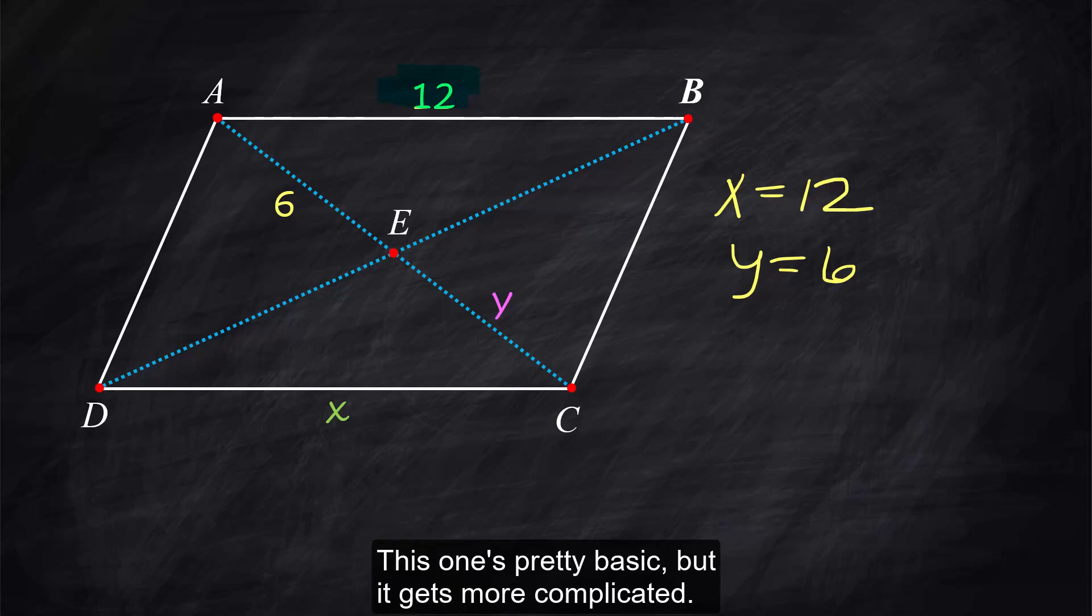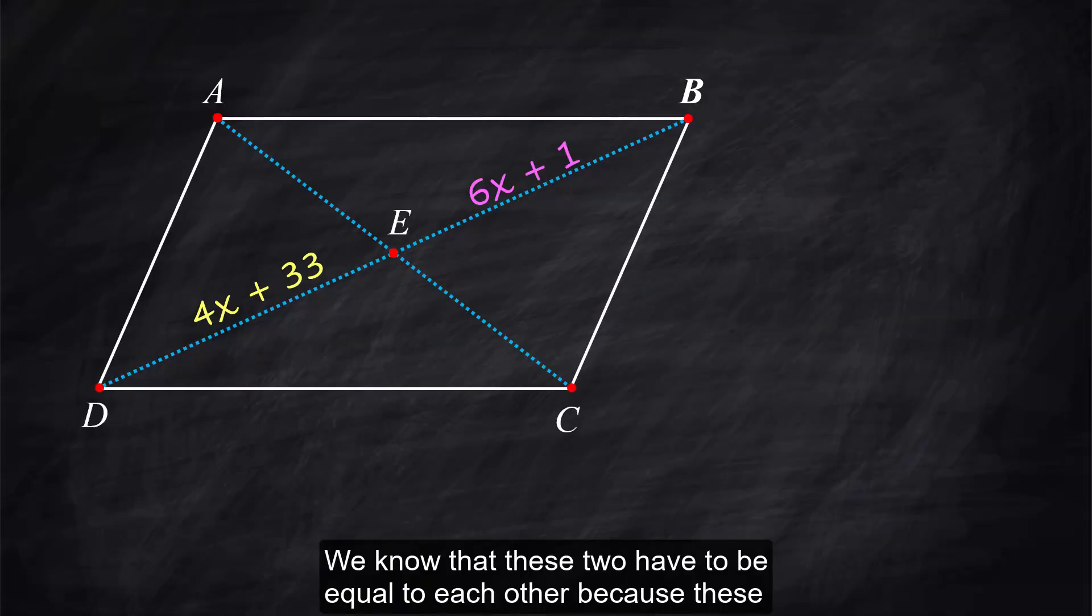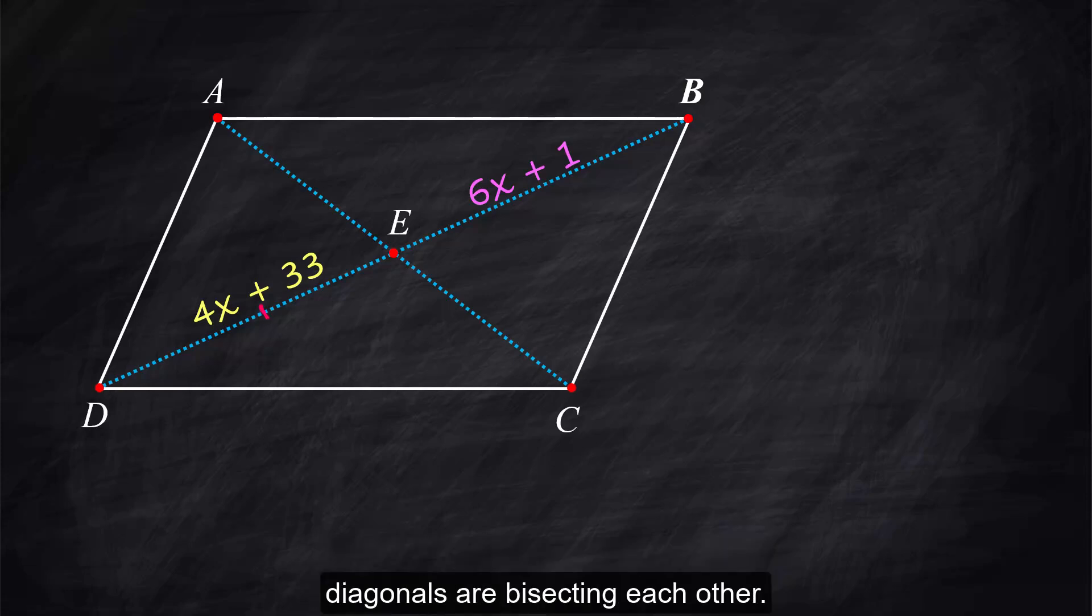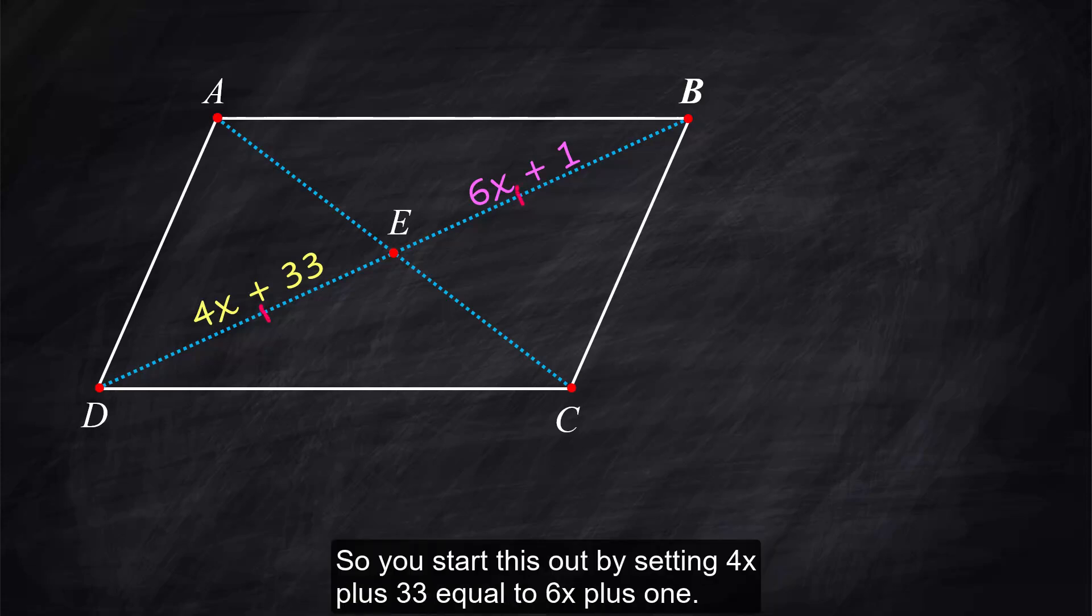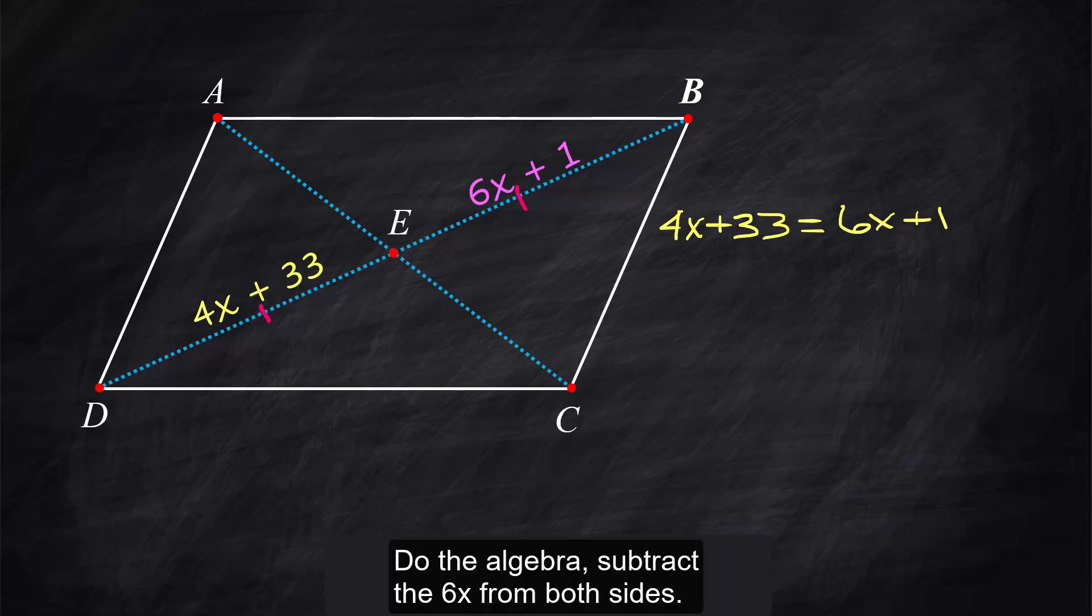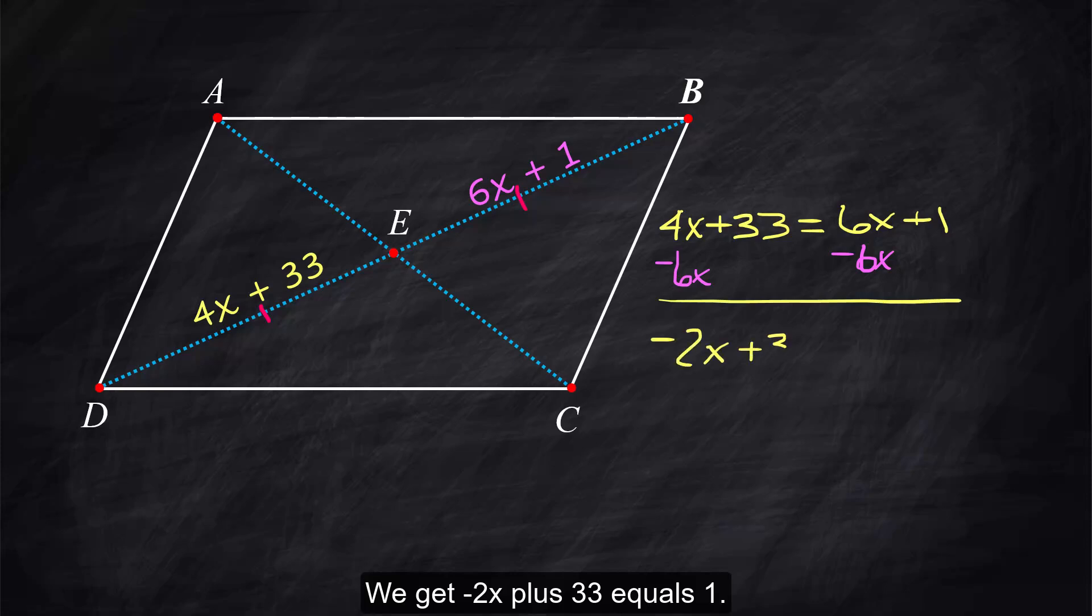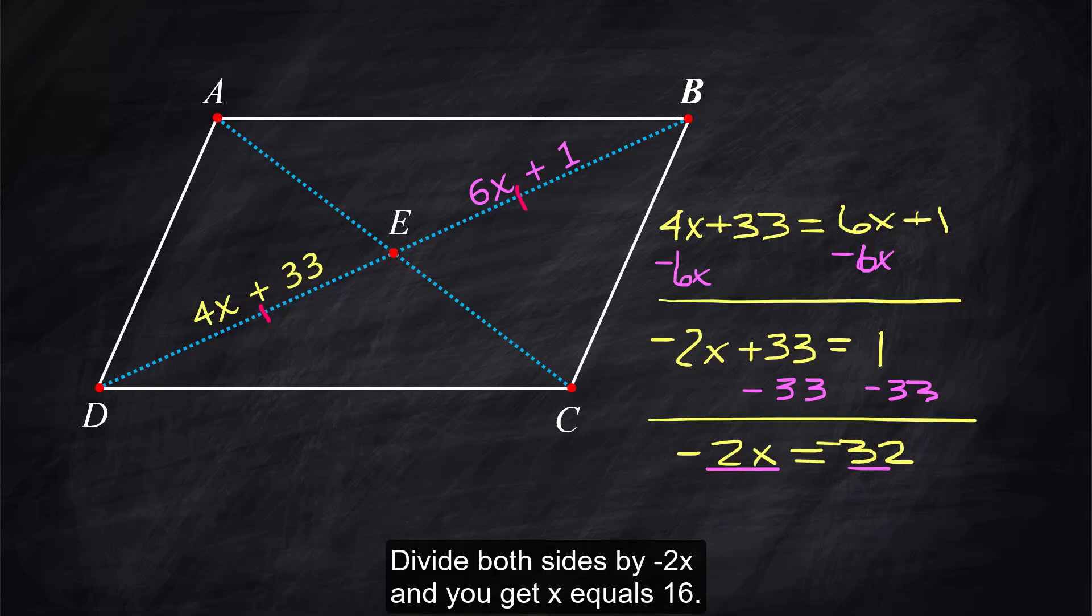This one's pretty basic but it gets more complicated like right now we know that these two have to be equal to each other because these diagonals are bisecting each other so you start this out by setting 4x plus 33 equal to 6x plus 1. Do the algebra subtract the 6x from both sides we get negative 2x plus 33 equals 1. Now subtract the 33 from both sides negative 2x equals negative 32 divide both sides by negative 2 and you get x equals 16.